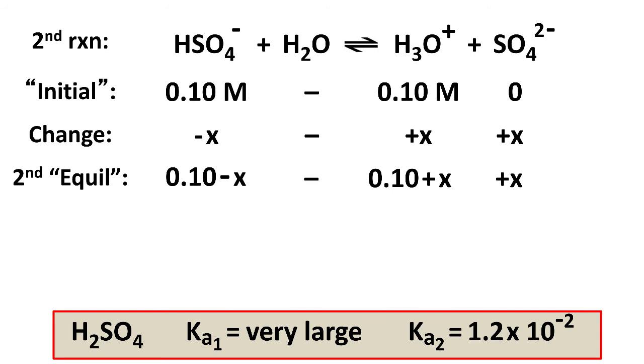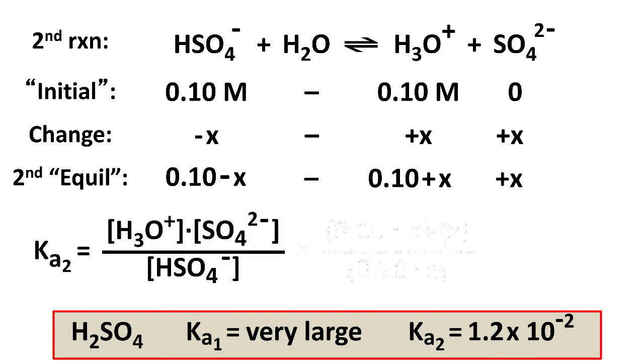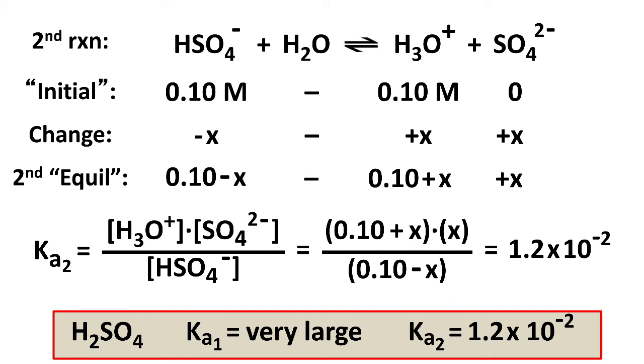Notice, of course, our x here is different than the x for the first dissociation. We're just using x as the generic variable. There's the setup for Ka2, 0.2, and there's the x expression, and what it equals.